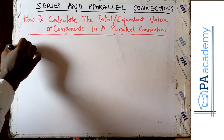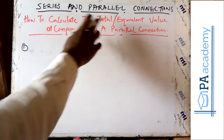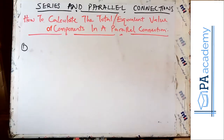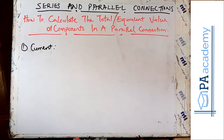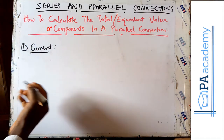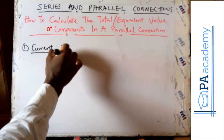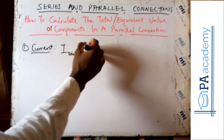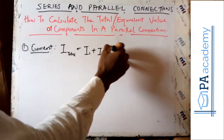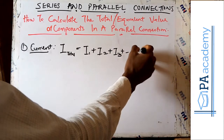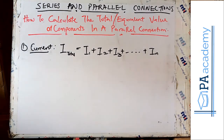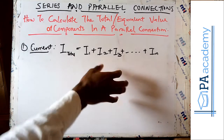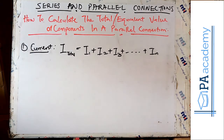To start with, we are going to look at the current — that is, how to calculate the total or equivalent value of current in a parallel connection. In a parallel connection, if you are to get the equivalent or total current, our current is I, so I_total is equal to I1 plus I2 plus I3, and so on, depending on the total number of components. You are going to find the sum of currents through individual components, and with that you'll get the equivalent value of the current.